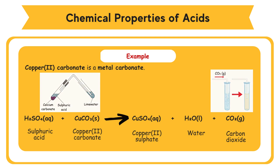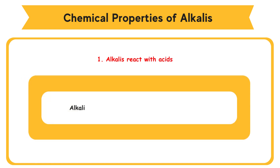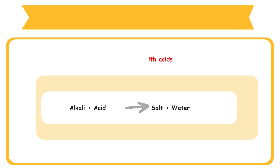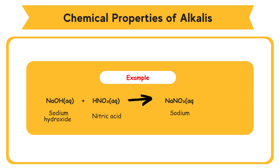Chemical Properties of Alkalis. 1. Alkalis React with Acids. Alkalis react with acids to produce salt and water. Example: Sodium Hydroxide, NaOH, reacts with Nitric Acid, HNO3, to become Sodium Nitrate, NaNO3, and water, H2O.